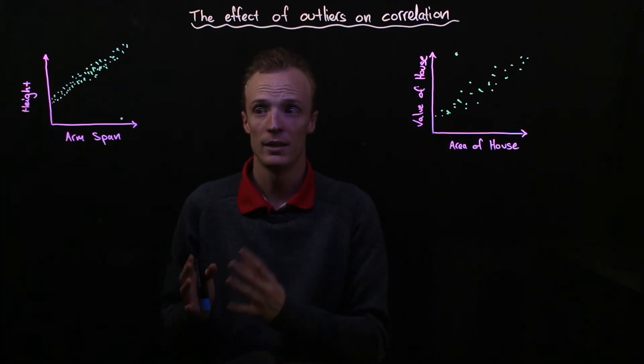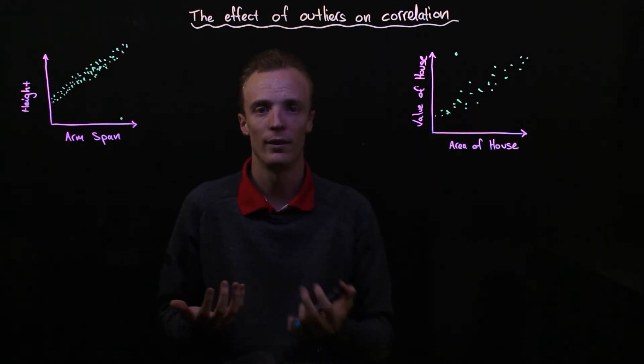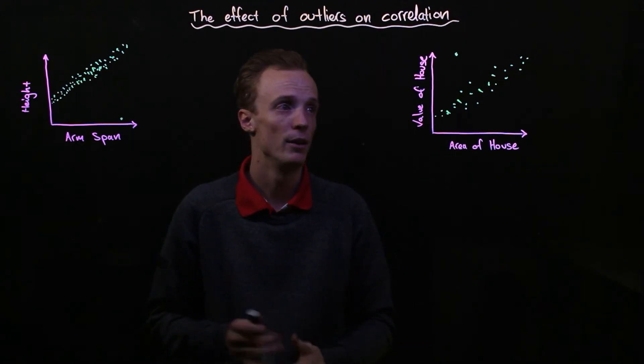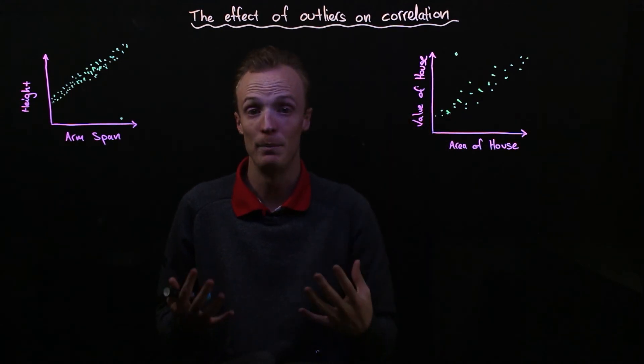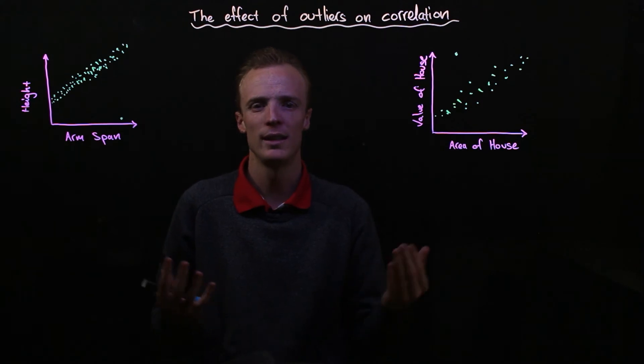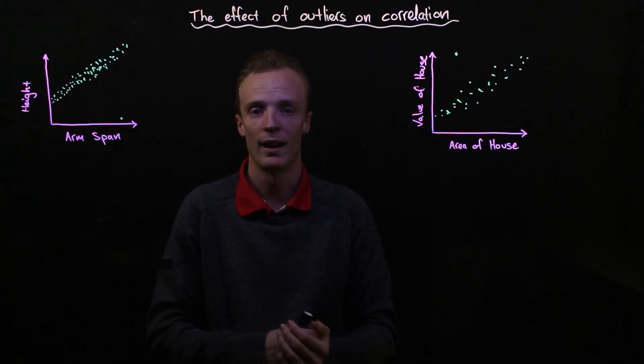Sometimes it is acceptable to just straight-out discard values if it's obvious that it's an error in data collection. There are other times however where that data point may be genuine. And if you can't prove that it's not genuine, you do need to keep it included when you're doing any sort of correlation calculation.